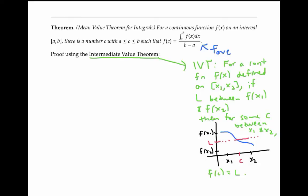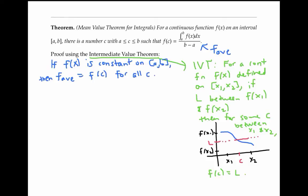Keeping in mind the intermediate value theorem, let's turn our attention back to the mean value theorem for integrals. Now it's possible that our function f of x might be constant on the interval from a to b. But if that's true, then the mean value theorem for integrals holds easily because f is just equal to that constant, which equals f of c for any c between a and b. So let's assume that f is not constant.